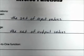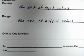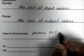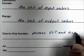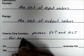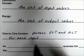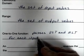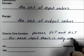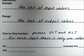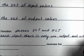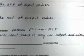Recall a one-to-one function. A one-to-one function passes the horizontal and vertical line tests — passes VLT and HLT. For each input, there is only one output, and vice versa: for each output, there is only one input.